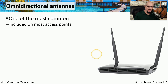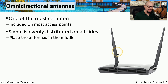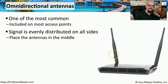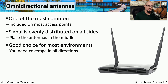When you purchase an access point, it often comes with rubber duck antennas. These are very common antenna types and are considered omnidirectional antennas, because the signal is relatively evenly distributed on all sides. The antennas are in the middle, and anyone nearby on any side of that device has effectively the same signal reception. This is a good choice for most environments — you can place the access point in the middle of a floor and everyone around it gains access.